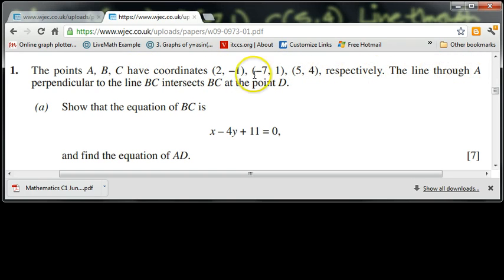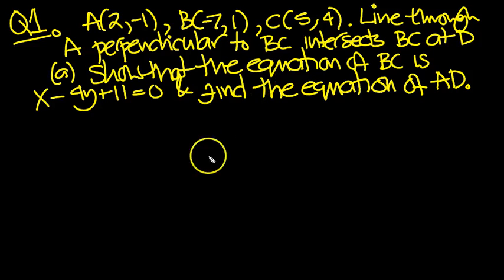The line through A perpendicular to the line BC intersects BC at the point D. Show that the equation of BC is x - 4y + 11 = 0. So the best way to look at this, let's start drawing it, and then we'll see what we make of it. That's probably the best thing to do with a question like this. So I've written it all out here, slightly abbreviated. So let's draw an axis then, first of all.